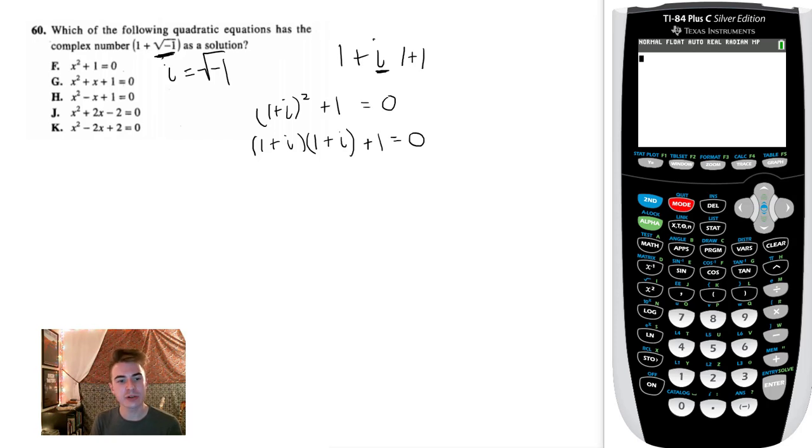So I'm going to plug in 1 plus i squared plus 1 equals 0. So that's 1 plus i times 1 plus i. I'm going to FOIL, so that's 1 plus 2i plus i squared plus 1 equals 0. We have some intuition because if i is the square root of minus 1, I know that i squared is certainly minus 1. So this becomes 1 plus 2i minus 1 plus 1 equals 0. That's 1 plus 2i equals 0. I don't think that's true. So it's probably not f, indeed it's not f.